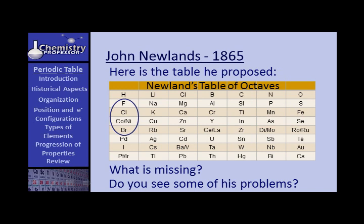The similar properties should have been in the vertical columns. But fluorine, chlorine, cobalt or nickel, and bromine don't necessarily have the same properties. The same thing is true over on the right. Oxygen and sulfur are very similar, but iron? Not so. Look at the third column — hydrogen, lithium, and then instead of beryllium, it's GL.